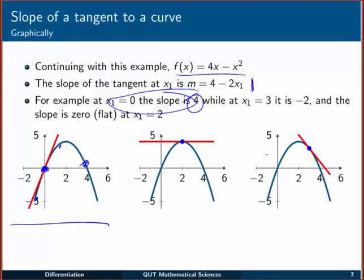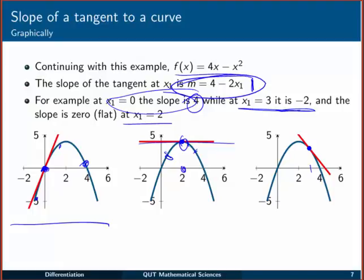Looking at the right-hand figure, where x₁ = 3, we've got a similar situation but in reverse — the red line is decreasing from left to right. Substituting x₁ = 3 into the slope equation: 4 − 6 = −2, and minus 2 indicates a decreasing slope. At x₁ = 2, the slope is 4 − 2(2) = 0, and exactly as expected, the tangent line is flat — there's no change in function value, the rate of change is 0 at that very point. This formula m = 4 − 2x₁ tells us the rate of change of this function at any point we like.